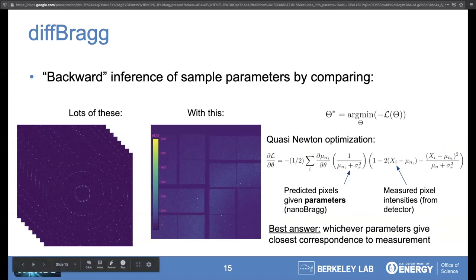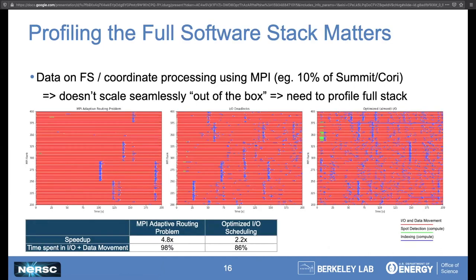I want to point out that with these kinds of codes, the full software stack can matter. This is an example of what happens when we process a large batch of images stored on disk. Here we have time on the x-axis and MPI rank on the y-axis. Red is bad—red means I/O and data movement over the network. Over here we had a problem with MPI; you can see things bunch up and there's a lot of red. Then we've reduced this I/O time by optimizing the way we schedule file access. None of this is happening on the CUDA level.